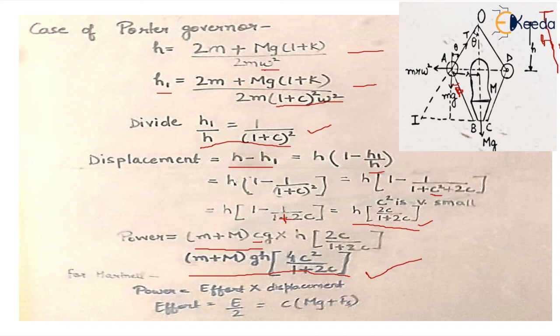And for Hartnell governor, power is effort into displacement, and effort is E upon 2 which is c, the change in speed, into mg plus Fs, where Fs is the spring force. Thank you.